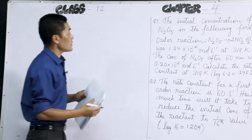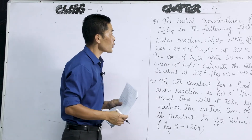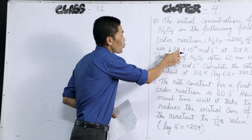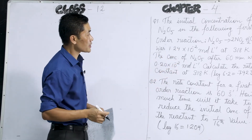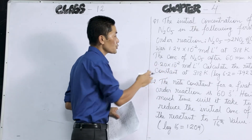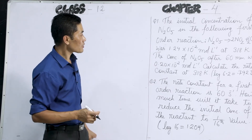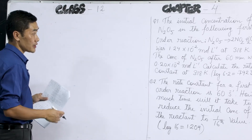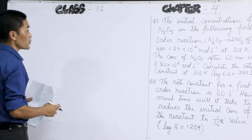The first question is: the initial concentration of N₂O₅ in the following first order reaction was 1.24 × 10⁻² mol/L at 318 K. The concentration after 60 minutes was 0.20 × 10⁻² mol/L. Calculate the rate constant at the same temperature 318 K. The value of log 6.2 is given as 0.7923.